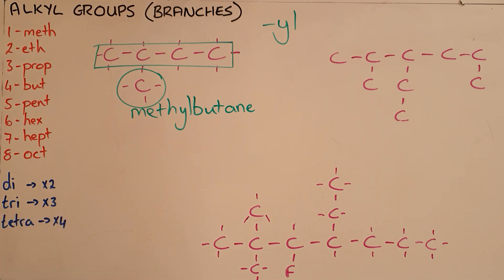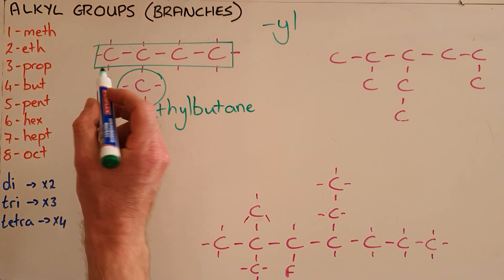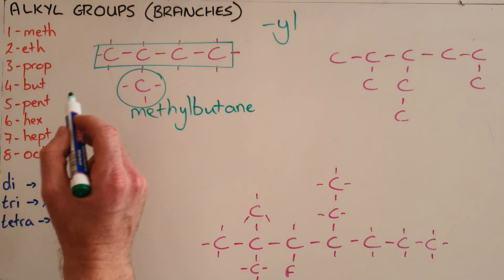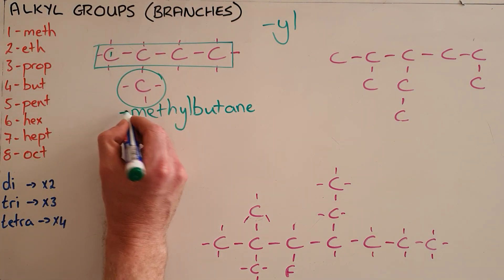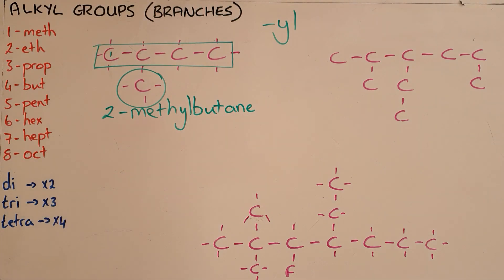What is important is to indicate the position of that branch. And we always come from the side that makes that number as small as possible. So if this is carbon number one then this would be 2-methyl butane.